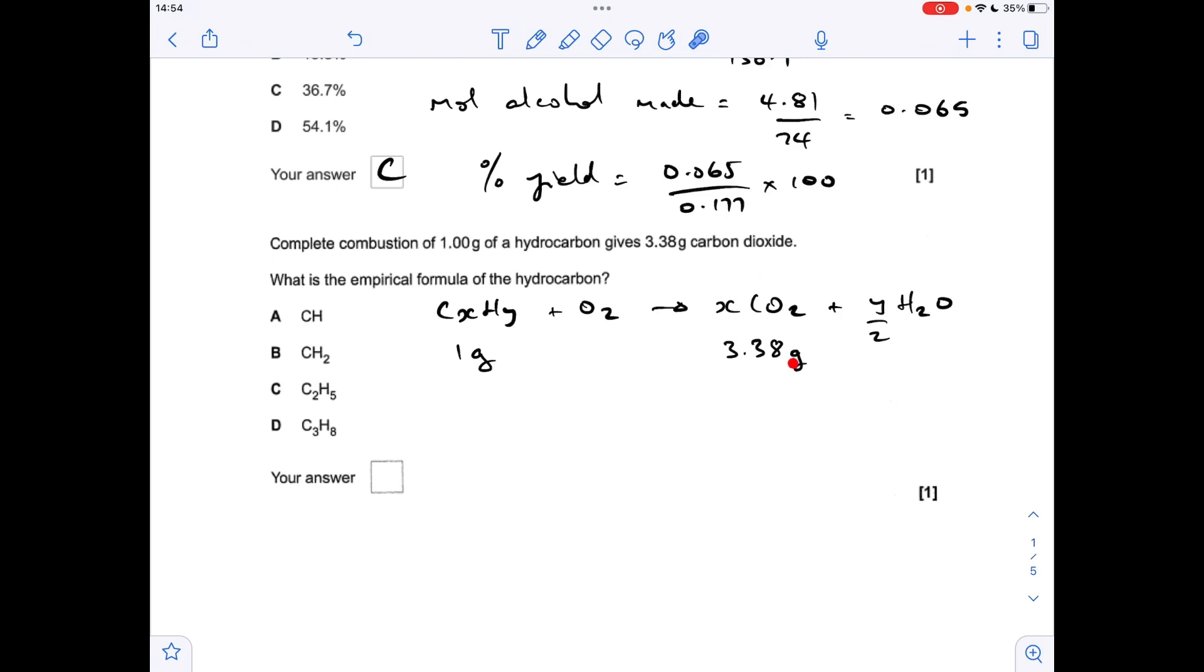The first thing I'm going to do is work out how many moles of carbon dioxide that is - that's just another mass over MR calculation: 0.0768 moles of CO₂. Remember what I said a minute ago? For every mole of carbon in the hydrocarbon you get that many moles of CO₂, so that means there's 0.0768 moles of carbon in this.